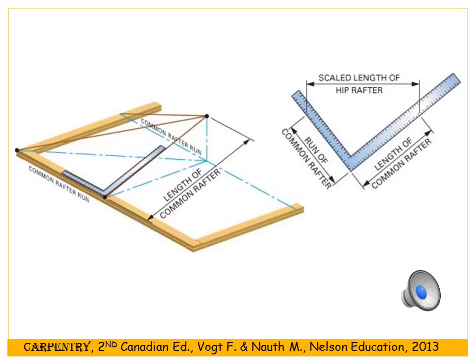We can get a scale version of the hip rafter length using our framing square. On the outside, the framing square is delineated in 12ths of an inch. On the tongue we put the run of the common rafter, and on the blade we put the length of the common rafter. Then we measure diagonally across to get a scale length for the hip rafter.